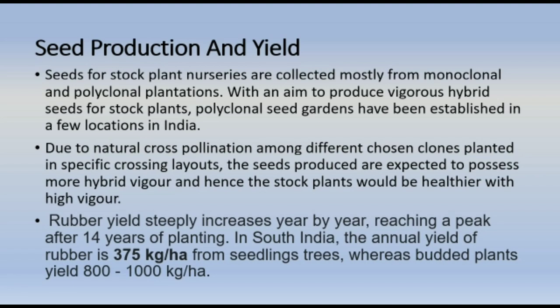Yield: Rubber yield steeply increases year by year, reaching a peak after 14 years of planting. In southern India, the annual yield of rubber is 375 kg per hectare from seedling trees, whereas budded plants yield 802 kg per hectare.